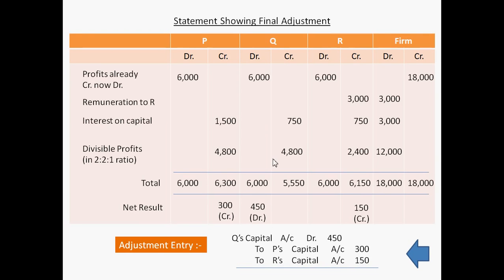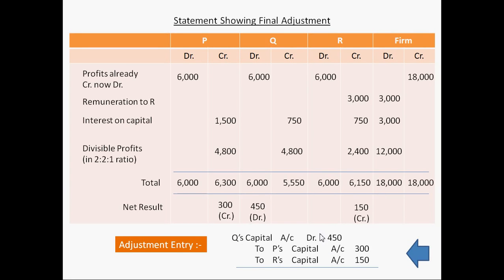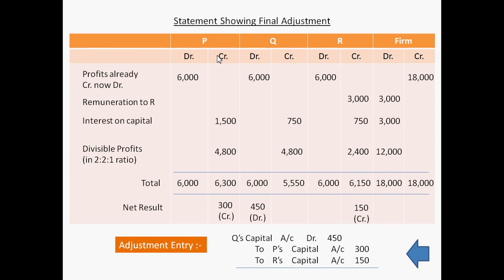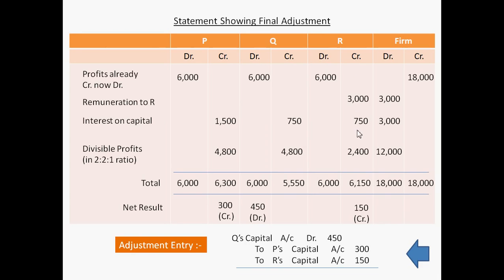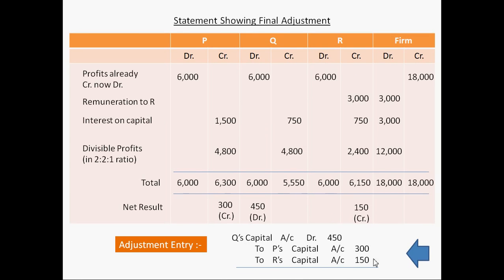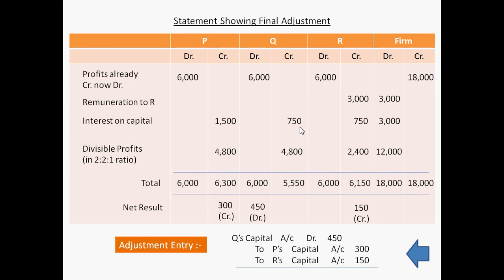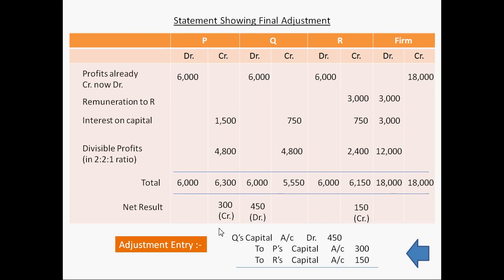Now we will compose the adjustment entry. In this adjustment entry we will debit Q's capital account with Rs 450, credit P's capital account with Rs 300 and credit R's capital account with Rs 150. So this is the adjustment entry. To get this adjustment entry we prepared the Statement of Final Adjustment, from which we come to know which partner's capital account will be debited and which will be credited. I hope you understood how to solve this type of problem related to past adjustments.